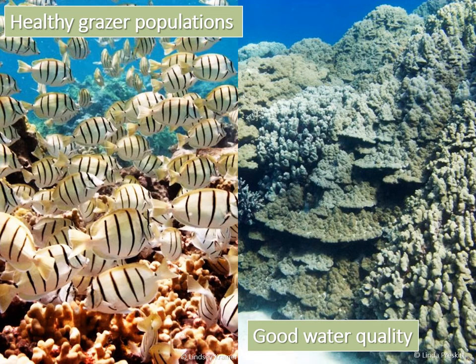Two critical reef conditions can help maintain a healthy coral reef ecosystem. The first is a healthy grazer population — grazing fish and invertebrates such as parrotfish, surgeonfish, and urchins can help maintain coral populations by eating algae and keeping it under control. The second is good water quality with minimal pollutants, especially excess nutrients from fertilizers and cesspools. Algae thrive in poor water quality conditions, which can fertilize and enhance blooms. Where one or both of these conditions are compromised, algal blooms can flourish and overgrow coral reefs.